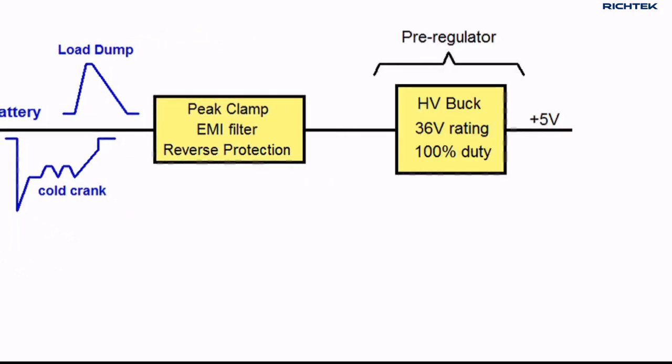This voltage is then sent to the pre-regulator, which can be a buck or a buck boost. It needs to have at least 36 volts max rating to withstand the load dump and must have high duty cycle capability for the cold crank.